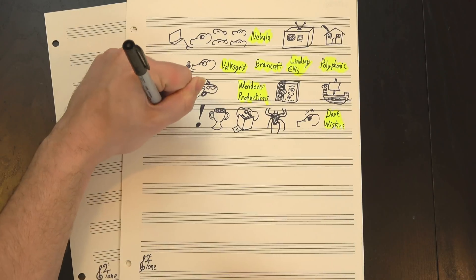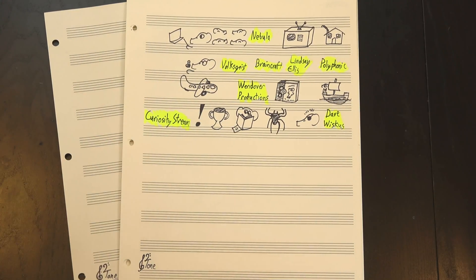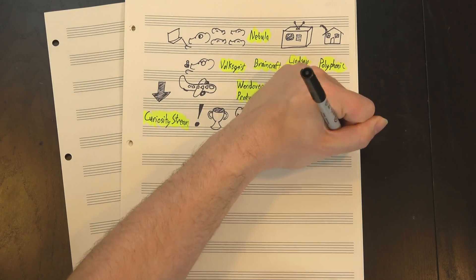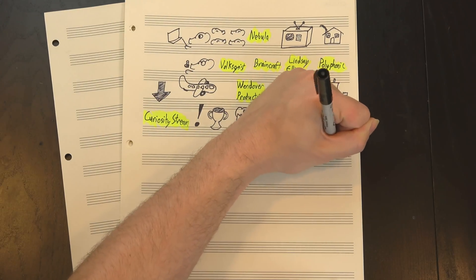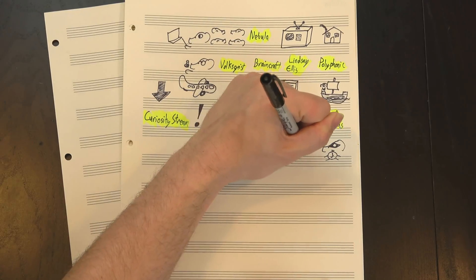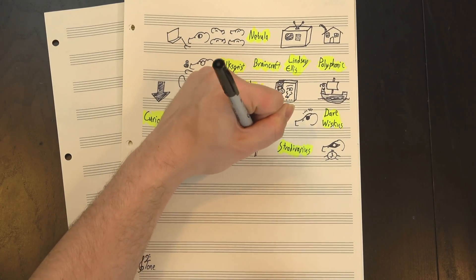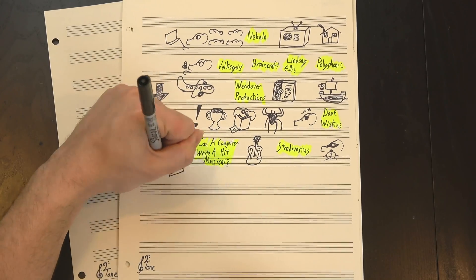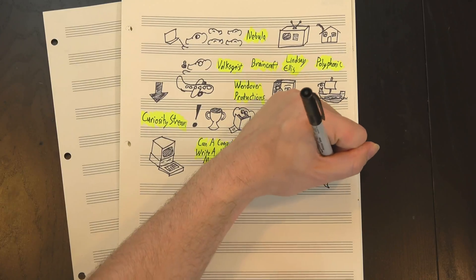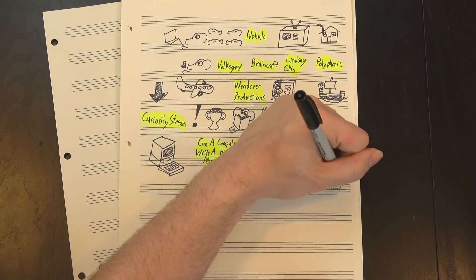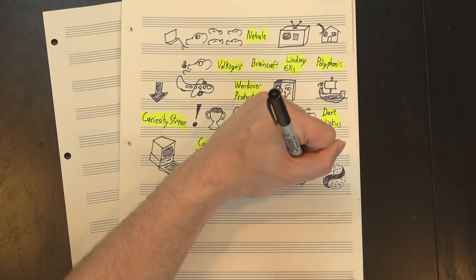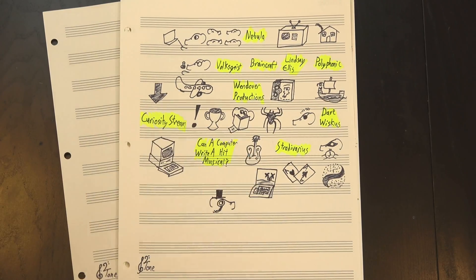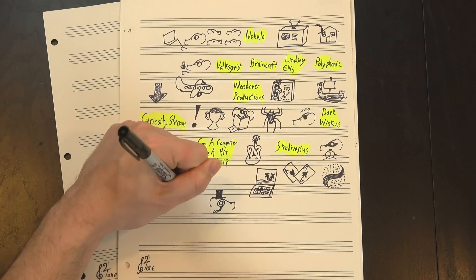And speaking of documentaries, we've also partnered with CuriosityStream to offer you an even better deal. If you sign up for CuriosityStream with a link in the description, not only do you get a free month or premium access to all their amazing documentaries, including personal favorites like Stradivarius, which tells the story of one of history's most renowned instrument makers, and Can a Computer Write a Hit Musical?, which answers the question in its title, you'll also get access to Nebula totally free for as long as you remain a CuriosityStream member. That's two platforms worth of stuff to watch, free for a month, and after that sticking around is super affordable, with annual plans starting under 20 bucks a year.